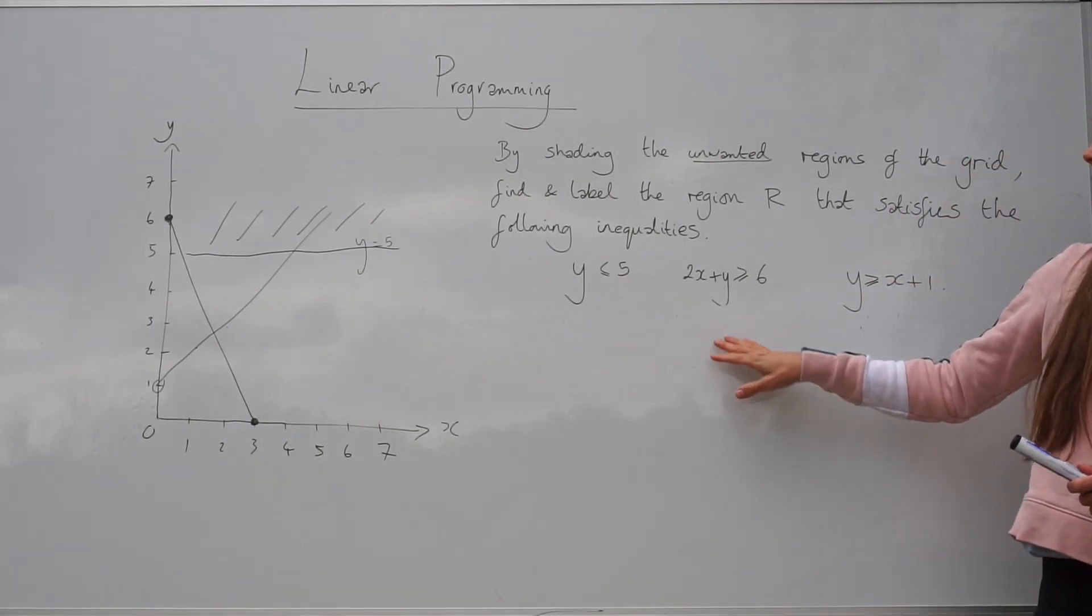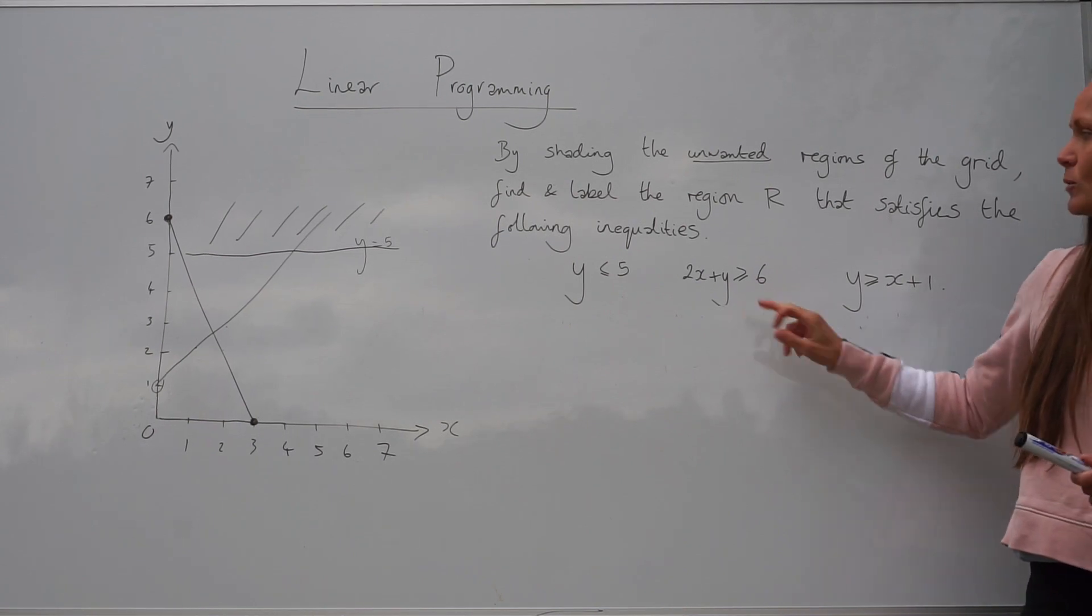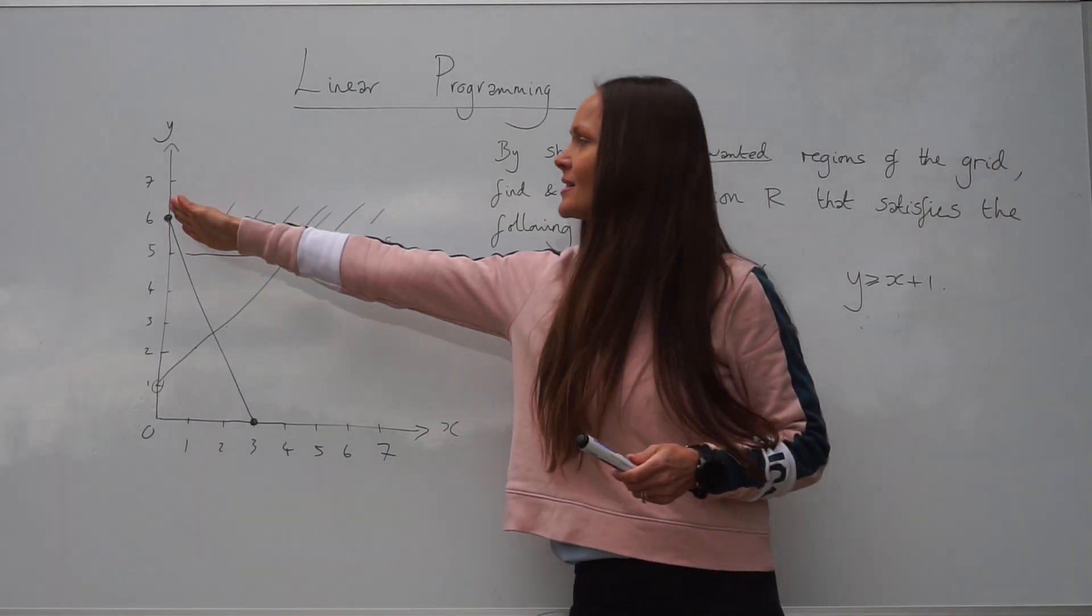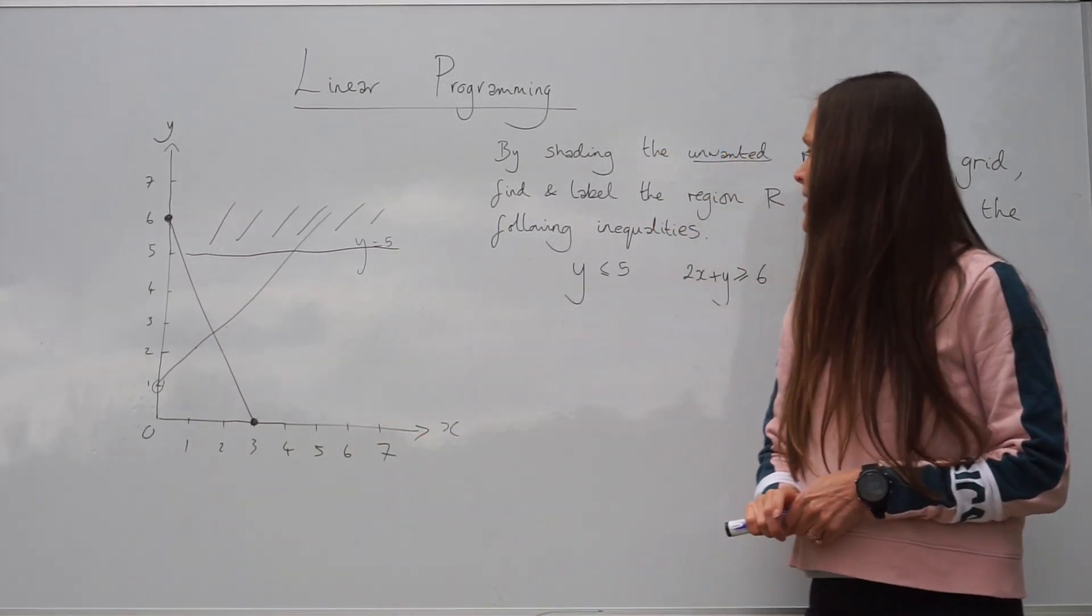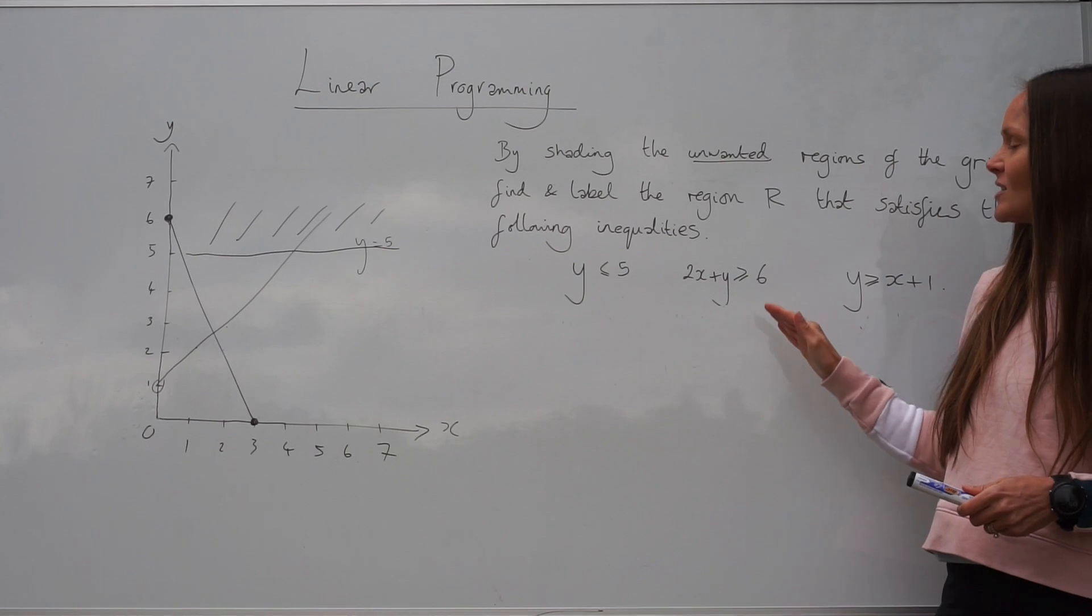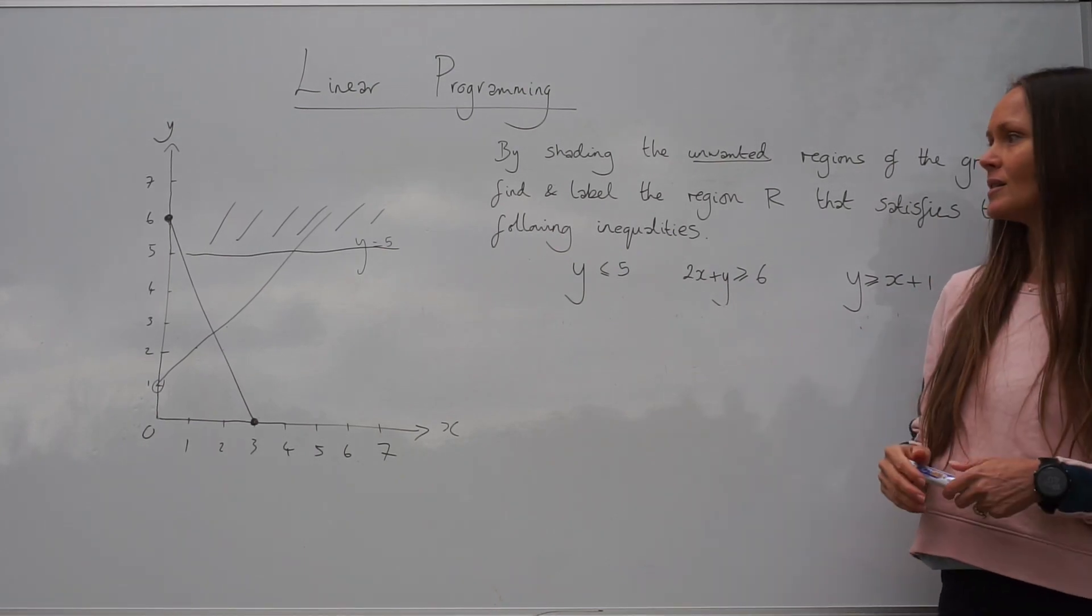Now, this one here. 2x plus y must be greater than or equal to 6. And remember, we're looking at this straight line here, the one that was drawn in the first place. So it says 2x plus y has to be greater than or equal to 6.